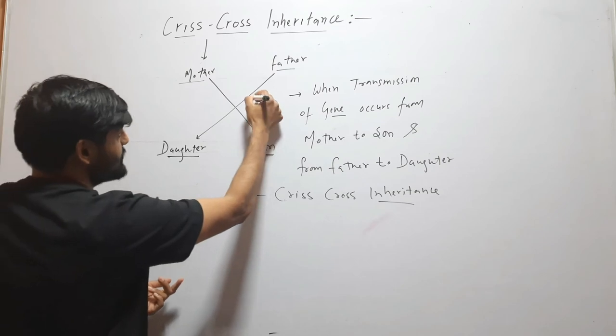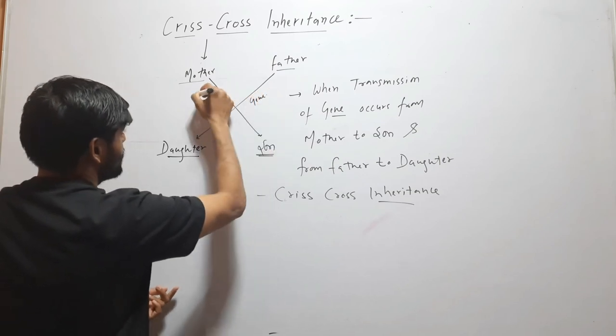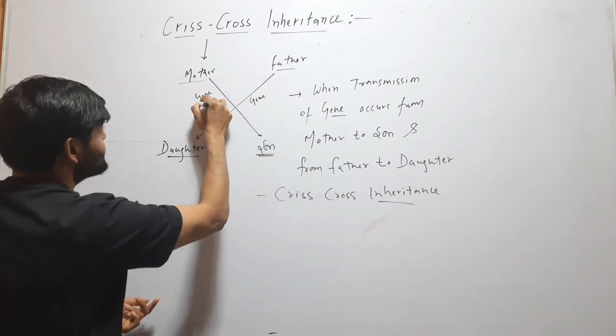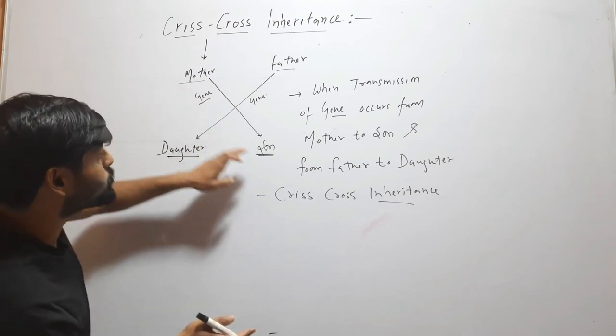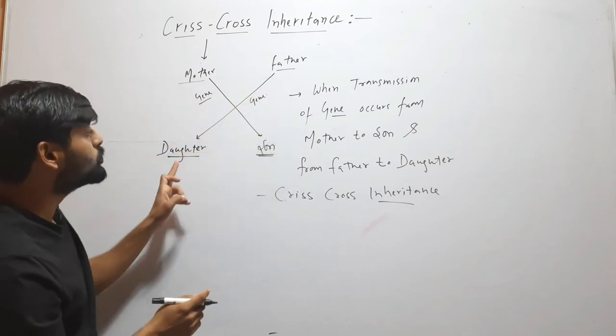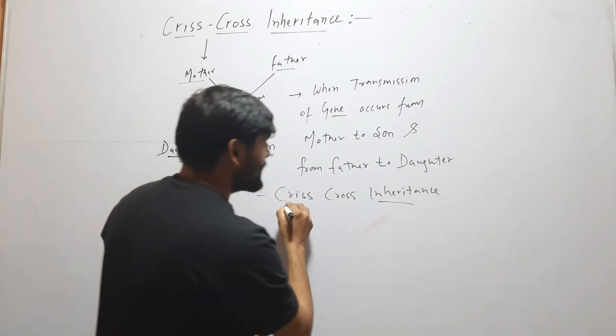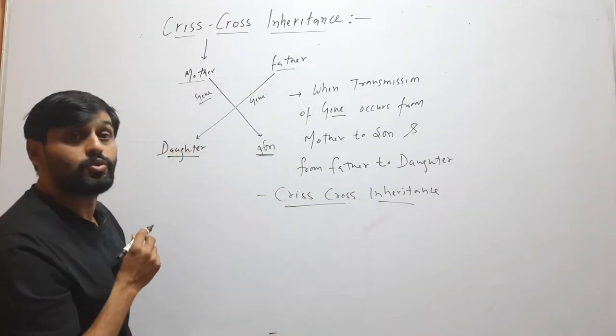Here we will take a gene. Here also a gene. When a gene is transmitted from mother to son and father to daughter, this type of inheritance is called Criss-Cross inheritance.